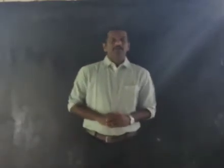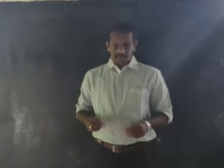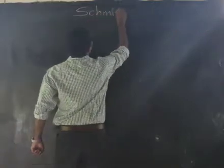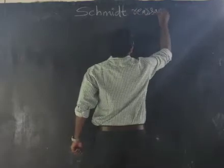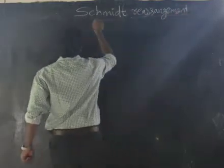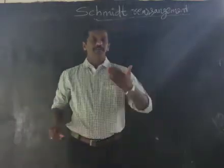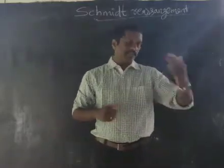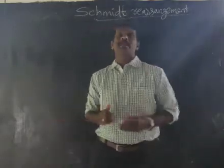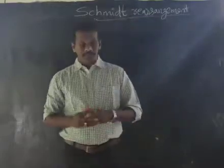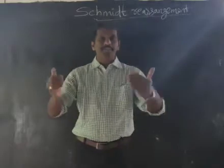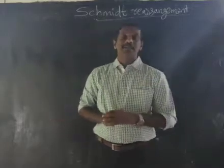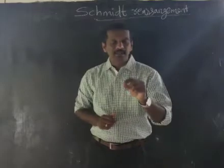Good morning. Today we are discussing another rearrangement: Schmidt rearrangement. Like Hofmann rearrangement, Curtius rearrangement, or Lossen rearrangement, in Schmidt rearrangement we also get isocyanate. This is another method for the preparation of isocyanate. In Schmidt rearrangement, carboxylic acid is treated with hydrazoic acid in the presence of sulfuric acid to get isocyanate.